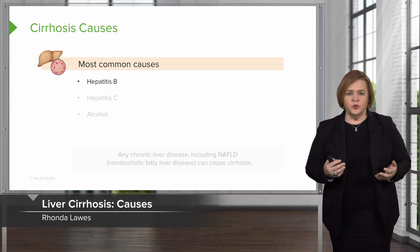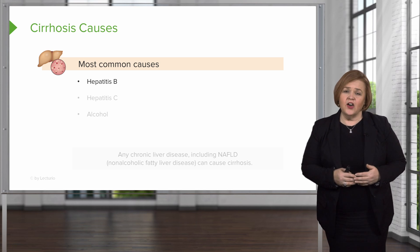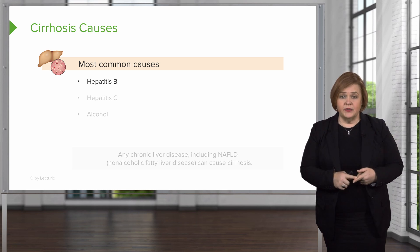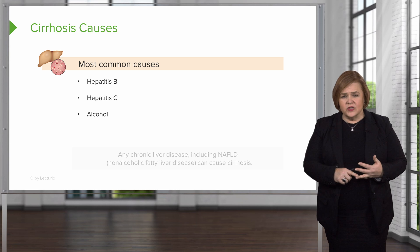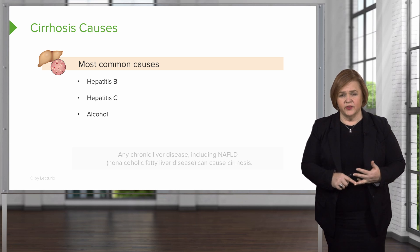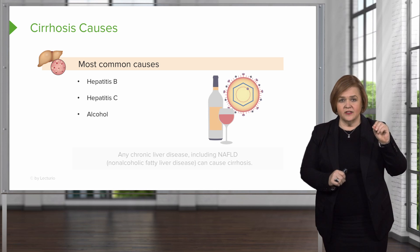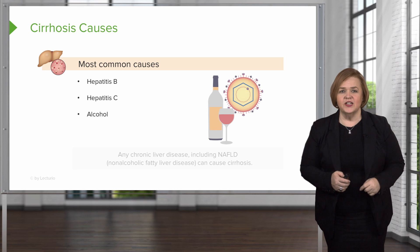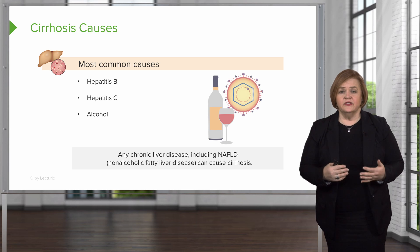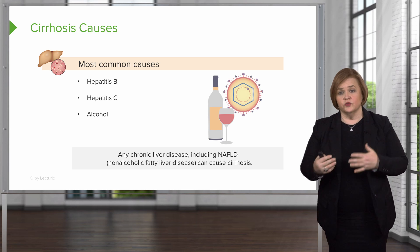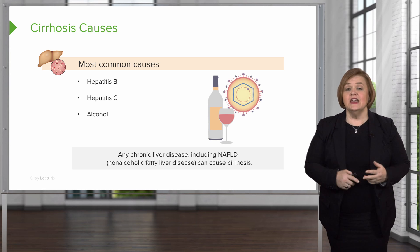In the United States, the most common causes that a patient will develop cirrhosis are chronic hepatitis B, hepatitis C, and alcohol-induced liver disease. Any chronic liver disease, including non-alcoholic fatty liver disease, can cause cirrhosis. But the most common causes are hepatitis and excessive alcohol.